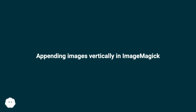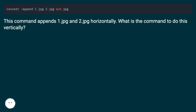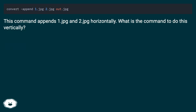Appending images vertically in ImageMagick. This command appends 1.JPG and 2.JPG horizontally. What is the command to do this vertically?